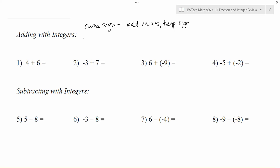And the same is true with negatives: negative 2 plus negative 3, we would add the values to get 5 and it would keep the sign, and would be negative 5.